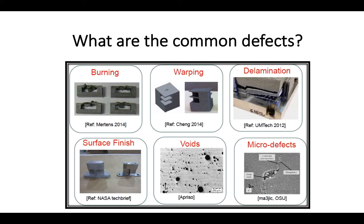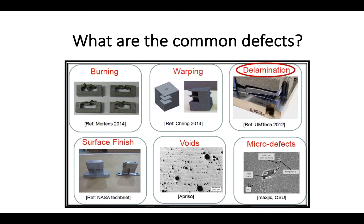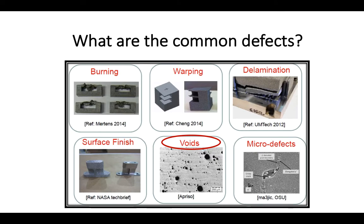Here we present some examples of defects observed in additive manufactured parts. The first one is called burning — it occurs when the material is heated too much, resulting in a burnt area on its final geometry. Warping is a distortion effect that occurs due to material shrinkage when cooling down, while delamination is the separation of successive layers. In some applications a high surface quality is required, and additive manufacturing presents issues like stair steps between layers or remaining powder on the surface. Additive manufactured parts can also present voids, which is basically the absence of material, occurring between layers or along the solidified part.